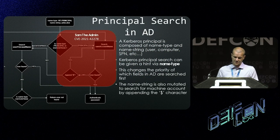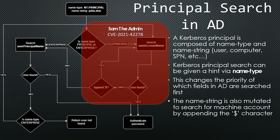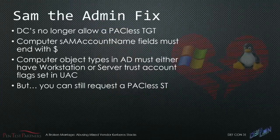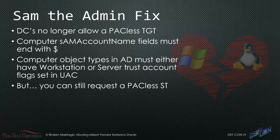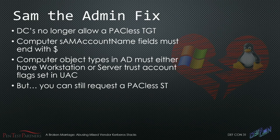Going back to the search algorithm, this covers the SAM account name area affected by the SAM-the-Admin CVEs. What did they do to fix it? Basically, you can no longer request the packless TGT. Microsoft deemed it wasn't a reliable way to identify users without a PAC embedded within it. There were some other hardening attempts: the SAM account name field must now end with a dollar whenever an unprivileged user creates it, and a few other hardening artifacts were made to the user account control settings. However, you can actually still request a packless service ticket.